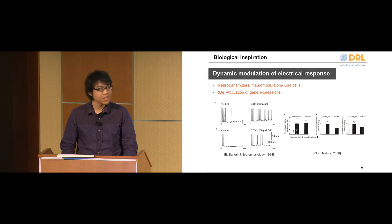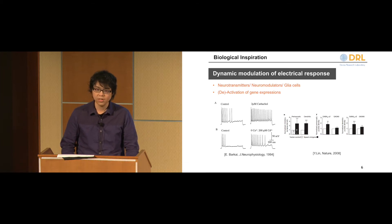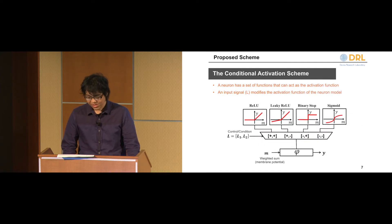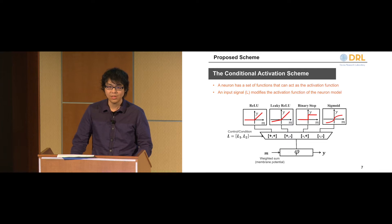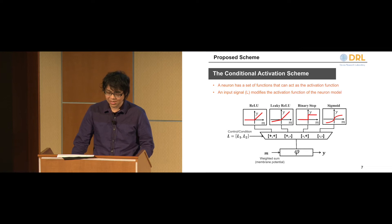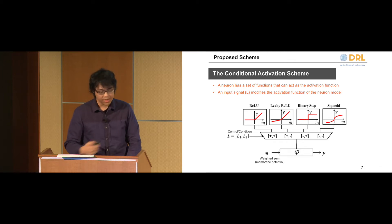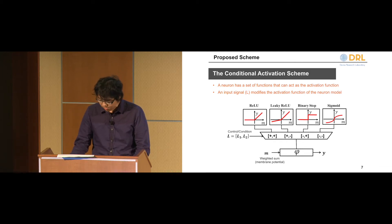The common context of all of these modifications is that a control signal — an input control signal from a source, whether it's a transmitter or a modulator — changes the dynamic response of the neuron. And that pretty much sums up our scheme. In the neuron model, the response of a neuron is characterized by its activation function. So this scheme translates to: a control signal source, which we call L, can modify the activation function of a neuron. We call this the conditional activation function.